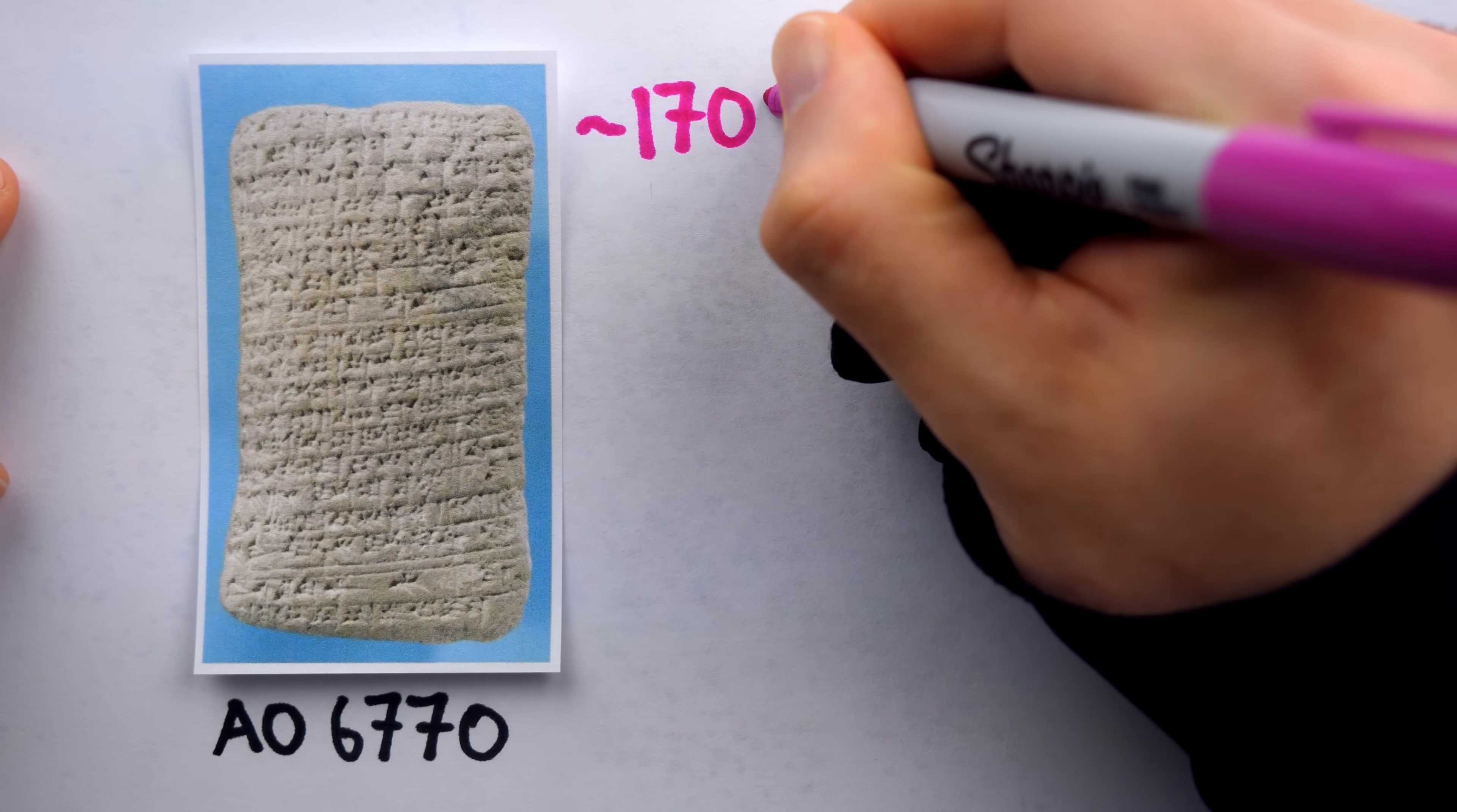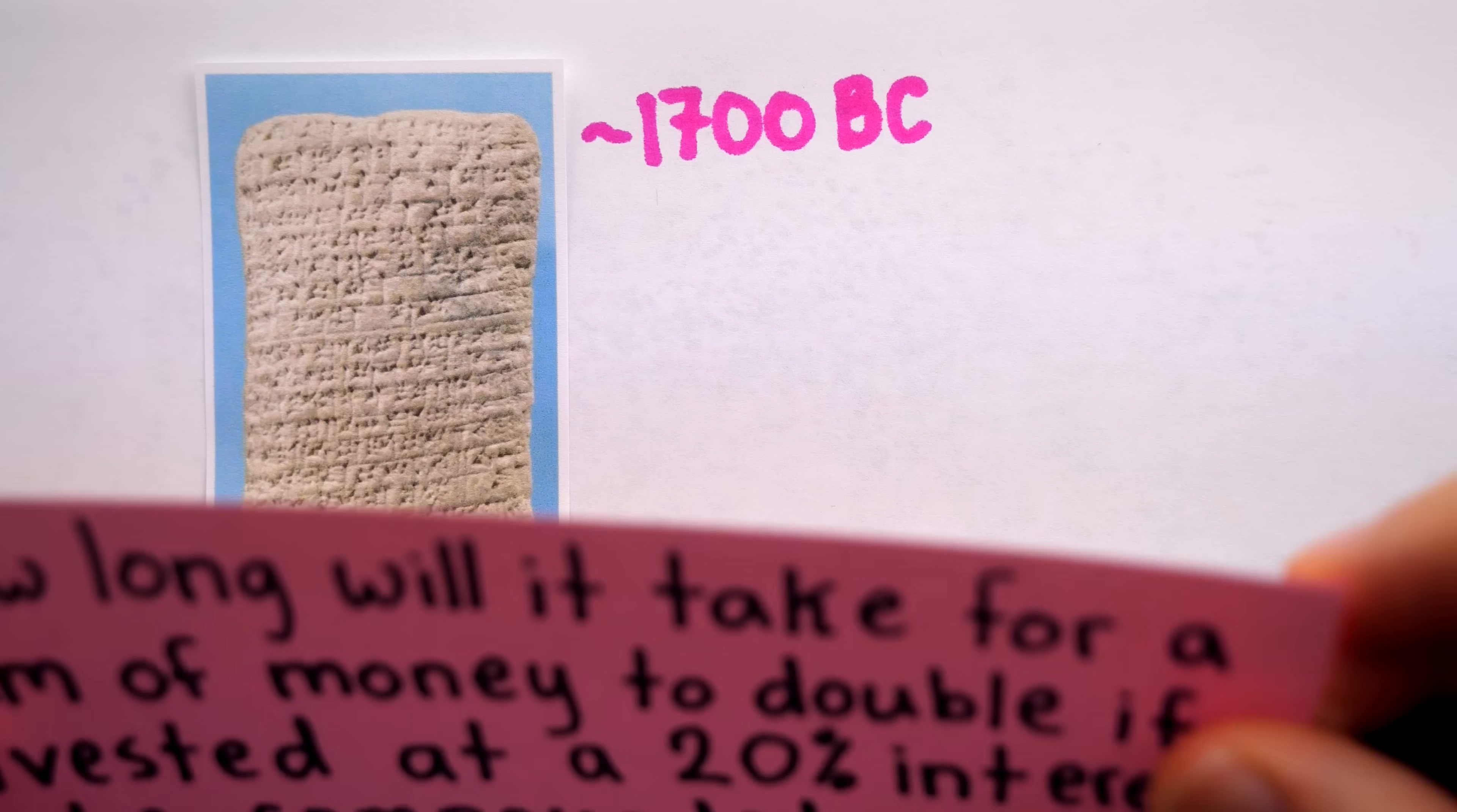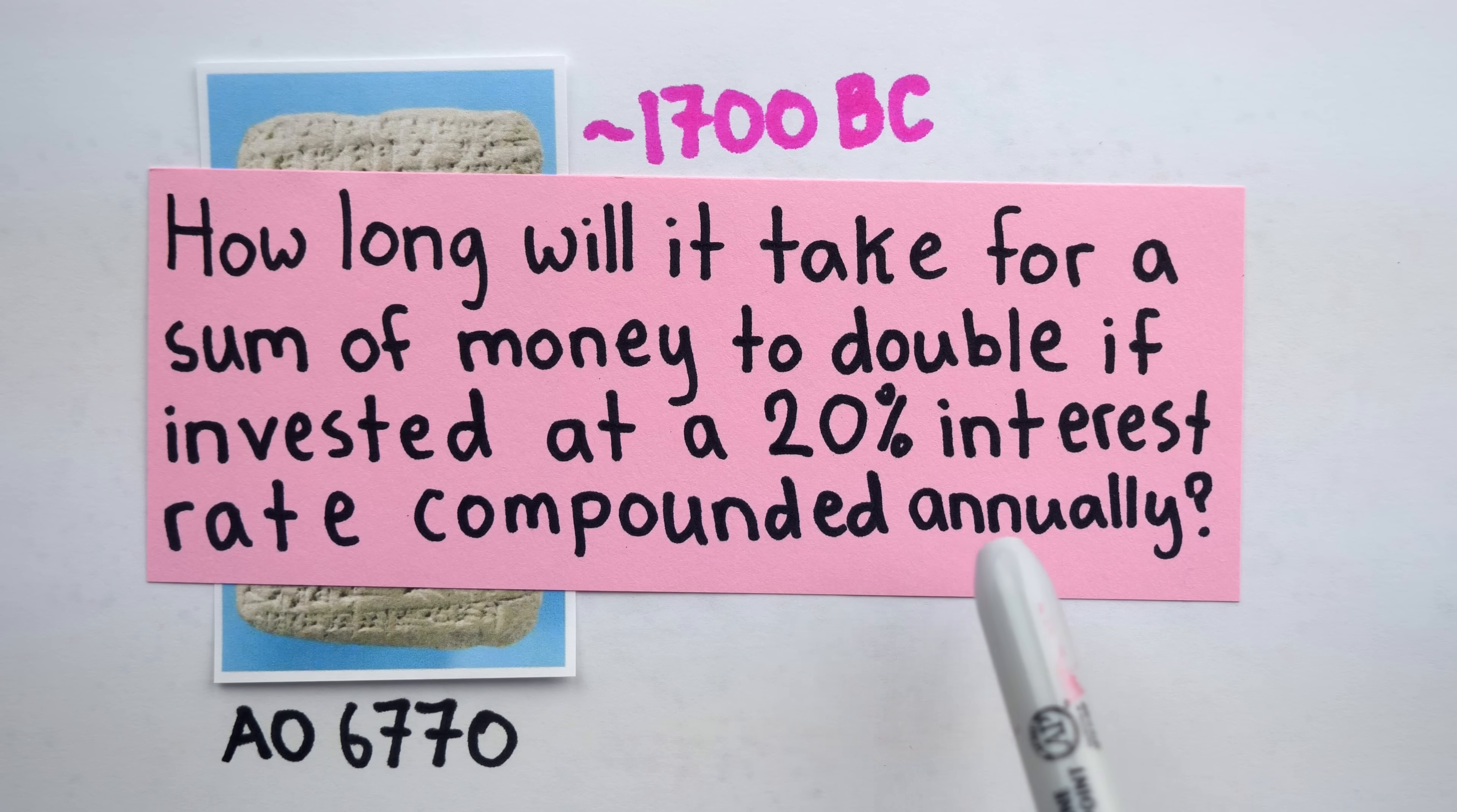It's a clay tablet, dated around 1700 BC, that was found in the region of what was once Mesopotamia, but is now Iraq. And it poses the following problem. How long will it take for a sum of money to double if invested at a 20% interest rate compounded annually?